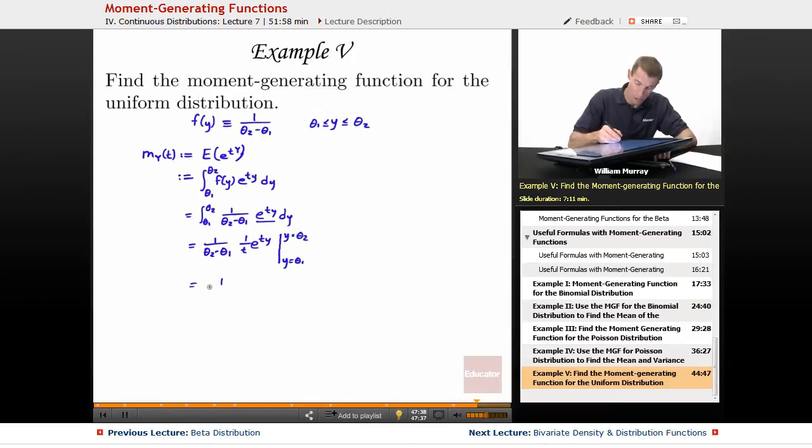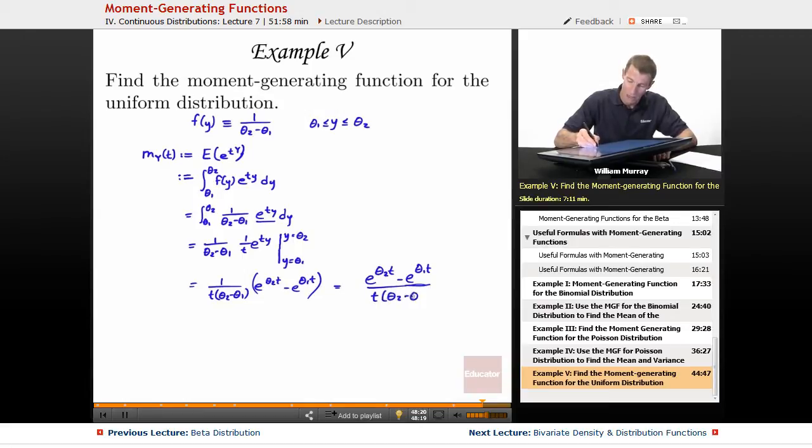And we want to evaluate that from y is equal to theta 1 to y is equal to theta 2. So we get 1 over, I'll combine the t and the theta 2 minus theta 1, theta 2 minus theta 1, and now we have e to the, we're plugging in these values for y, so e to the theta 2 times t minus e to the theta 1 times t. I need some parentheses here. And I could write that over a common denominator, e to the theta 2t minus e to the theta 1t. And we divide that by t times the quantity theta 2 minus theta 1.